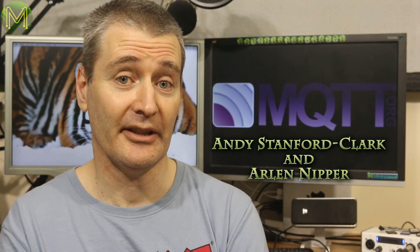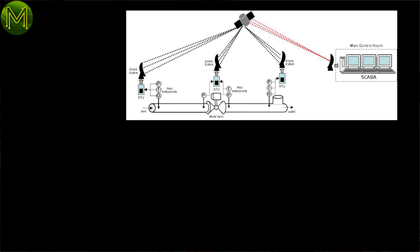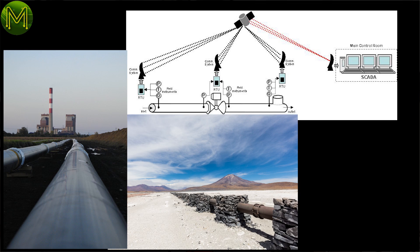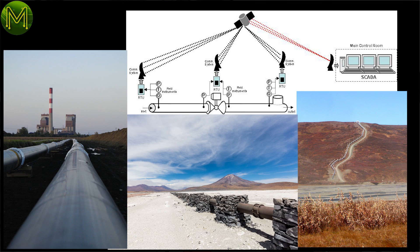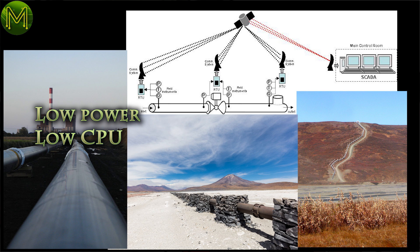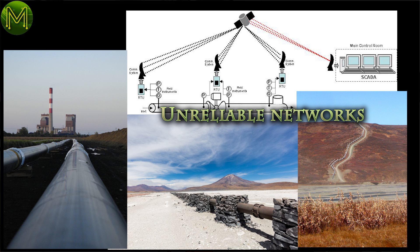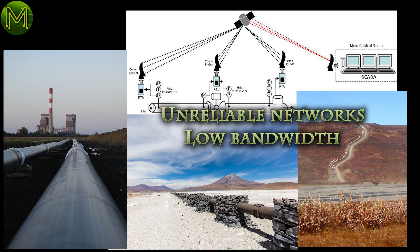MQTT was created in 1999 by Andy Stanford-Clark and Arlan Niver out of a need to send sensor data from oil pipes in the desert over satellite links. Andy had to solve the problem of communicating with low power, low CPU, low memory sensors instantaneously over unreliable, low bandwidth wireless and satellite networks.